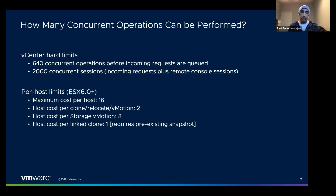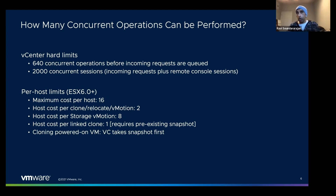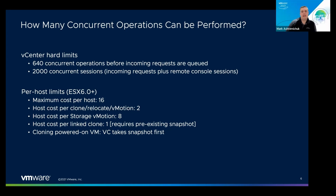A given host can therefore be involved in eight operations at a time. Other operations have different costs — for example, Storage vMotion is more expensive with a cost per host of eight instead of two, while linked clones are cheaper. These costs reflect our estimate of how much impact each operation has on the platform, because if we do too many at once you're going to impact the performance of virtual machines.